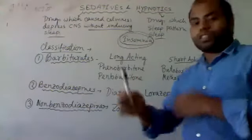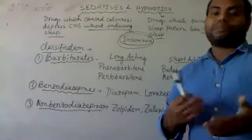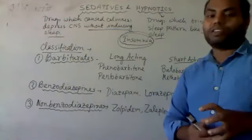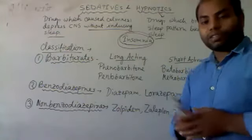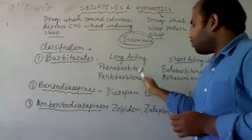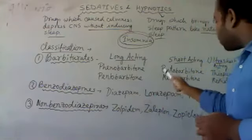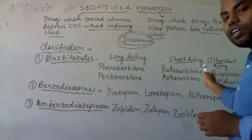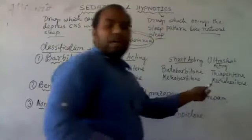Long-acting barbiturates are used for sleep patterns or as sedatives, and their effect lasts for more than 8 hours. Examples include phenobarbital and pentobarbital. Short-acting barbiturates include pentobarbital and mephobarbital. Ultra-short-acting examples are thiopental and hexobarbital, which work for about 1 to 2 hours.